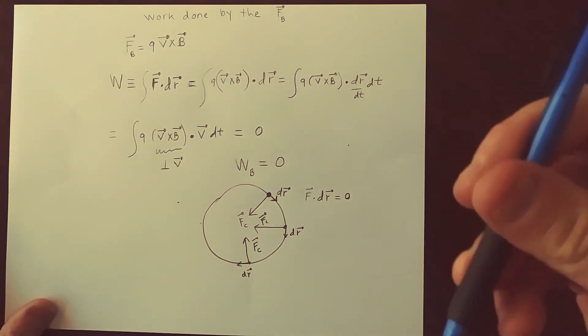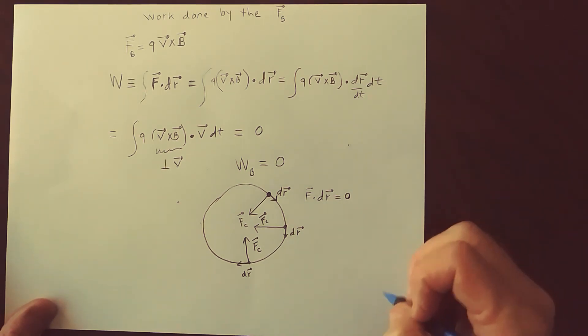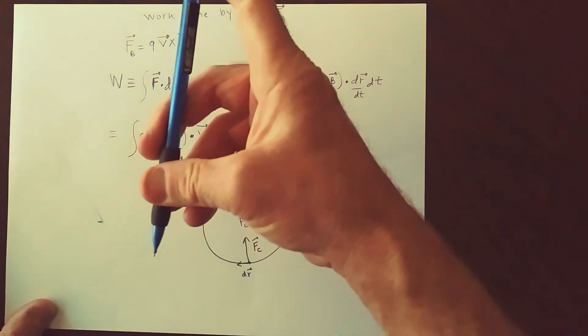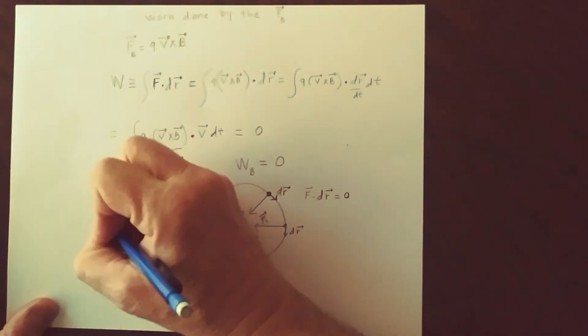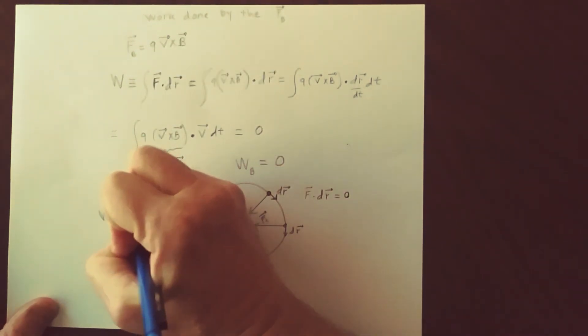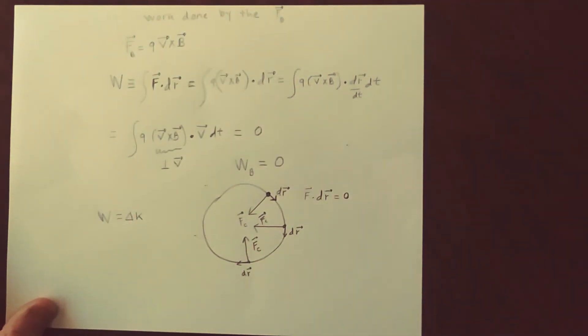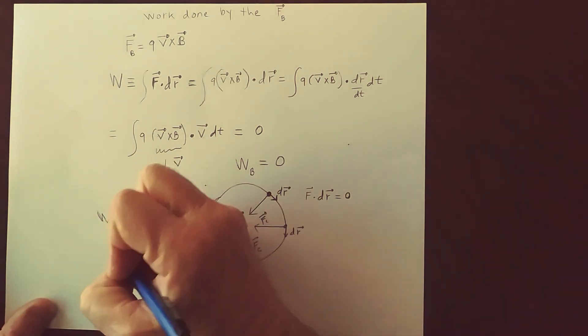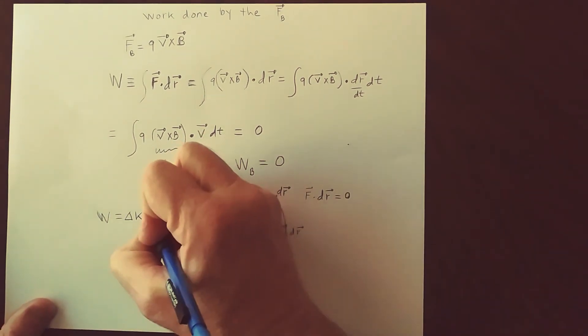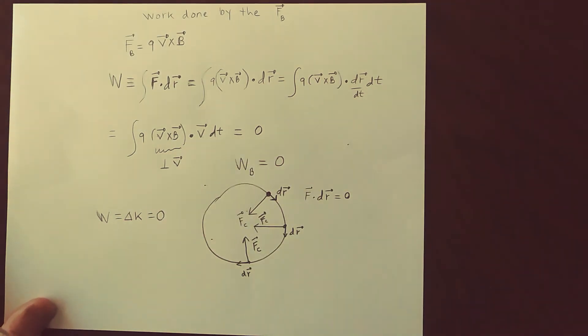But what this is telling us is that because of the work kinetic energy theorem, work is equal to the difference in kinetic energy, but if the work is zero, then it means the kinetic energy difference is always zero.